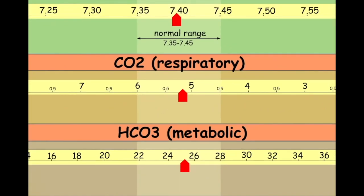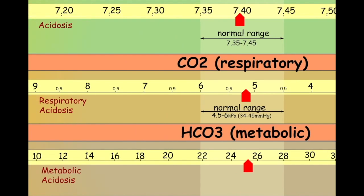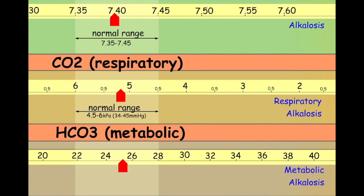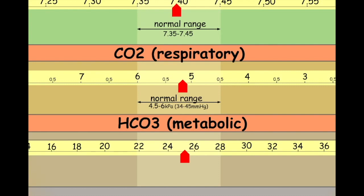The middle element in our model represents CO2, the respiratory component of blood pH. The normal range for CO2 is approximately 4.5 to 6 kilopascals on an arterial blood gas. Slightly confusingly, in this model we haven't reversed the scale, so we have high CO2 levels on the left and low CO2 levels on the right. Hopefully the reasons for doing this will become obvious as the video progresses.